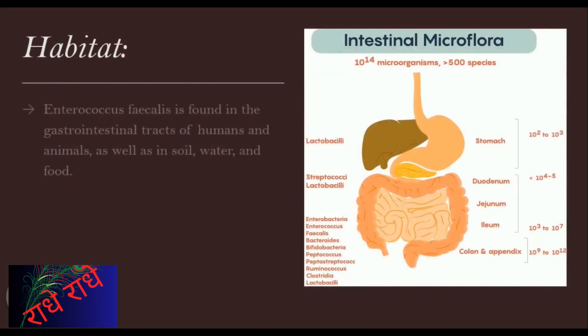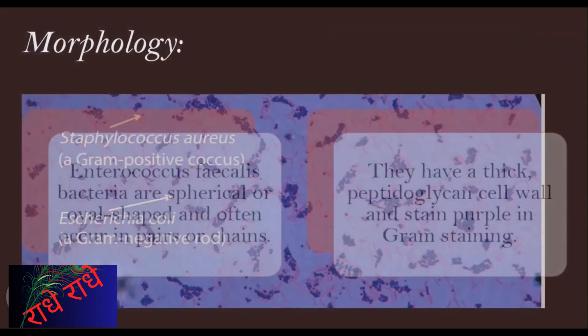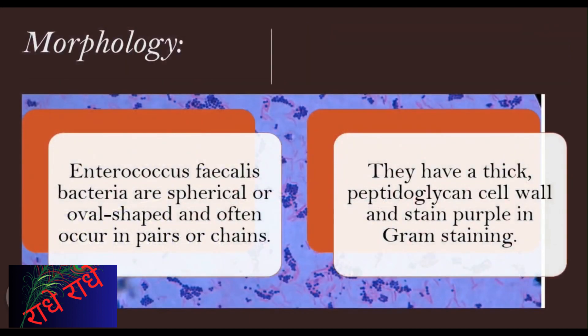E. faecalis is a bacterium commonly seen in the gastrointestinal tracts of humans and animals, as well as in soil, water, and various food sources. Its adaptability and survivability in a variety of environments makes it one of the most abundant and diverse bacteria. E. faecalis is a gram-positive, spherical to oval-shaped bacterial species that typically forms pairs and chains. Its cell wall is composed of a thick layer of peptidoglycan which, upon gram-staining, produces a purple color, aiding in its identification.